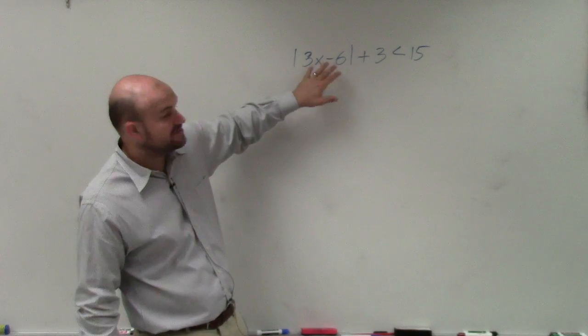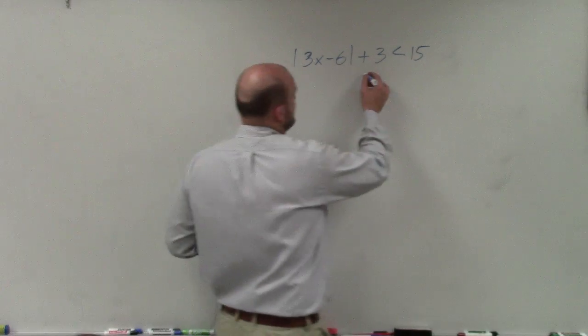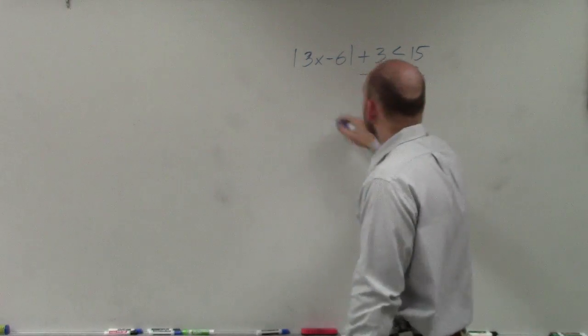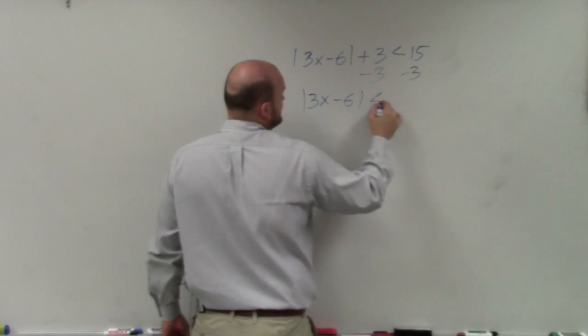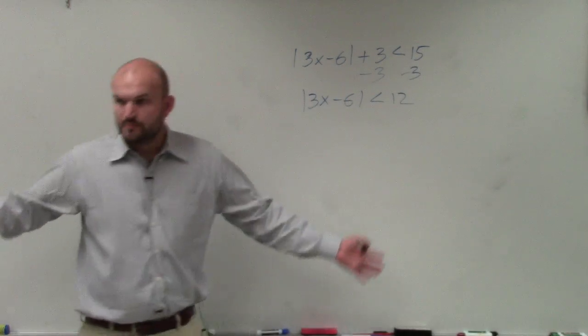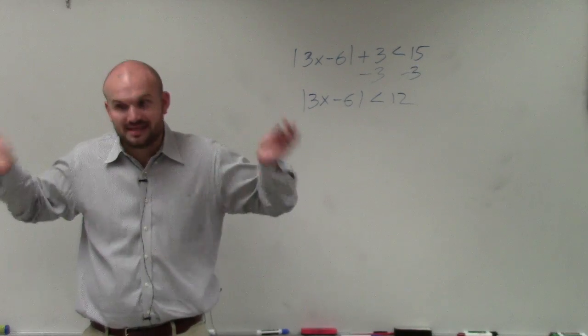Isolate, I'm sorry, the absolute value. You guys can see absolute value is being added by 3, so we subtract 3. So I have |3x - 6| < 12. We good? We good with the first step? Isolate the absolute value.